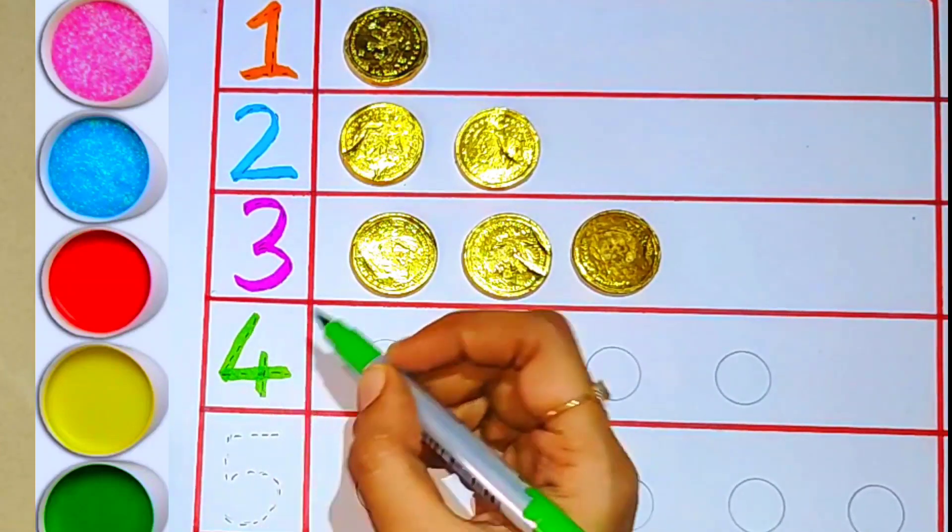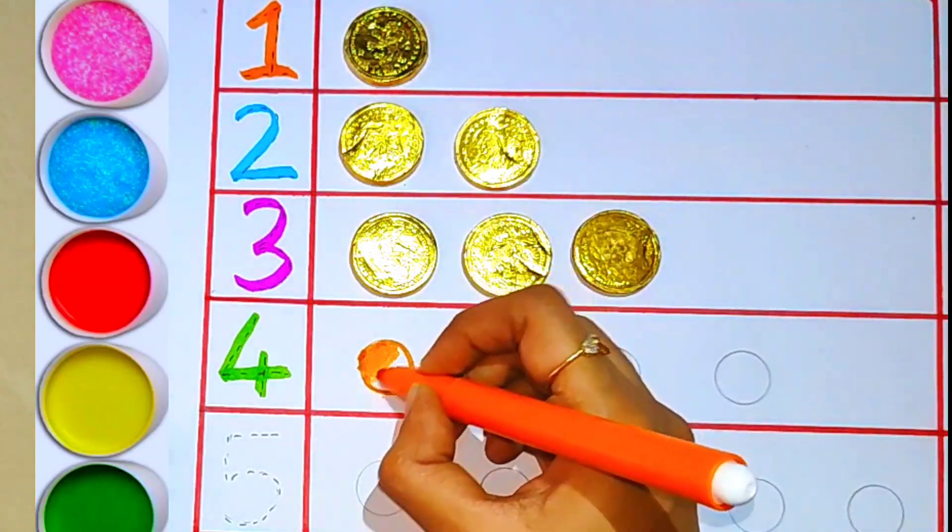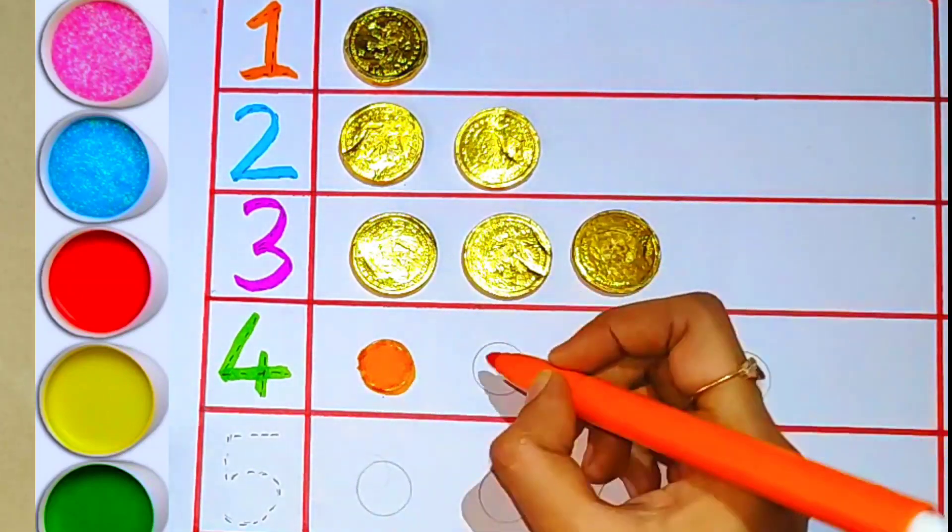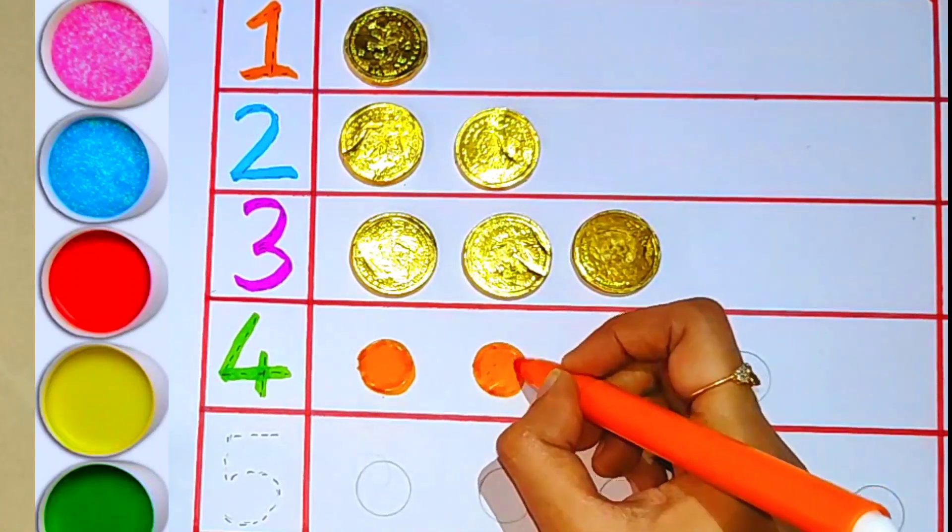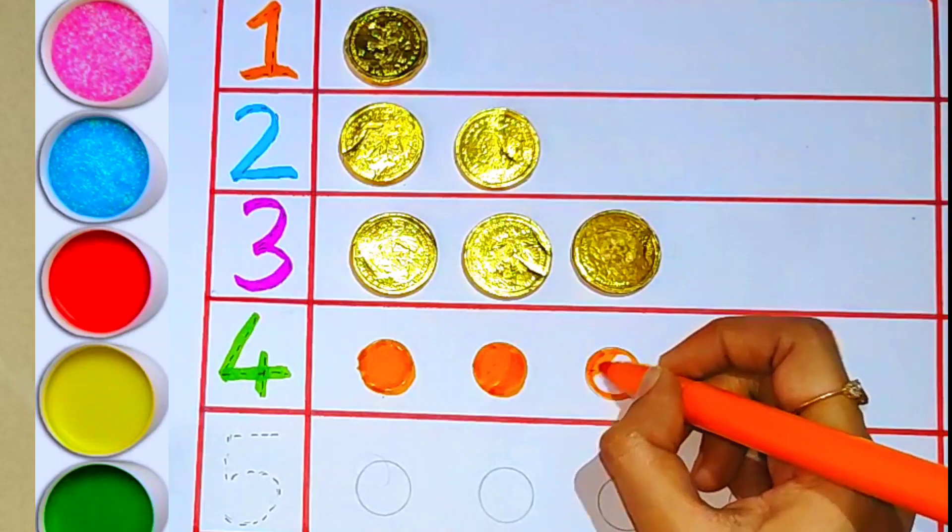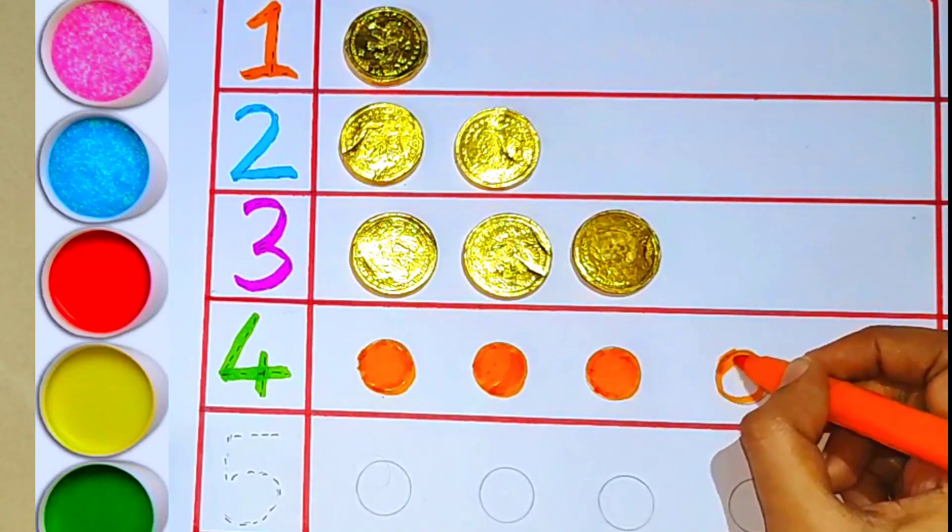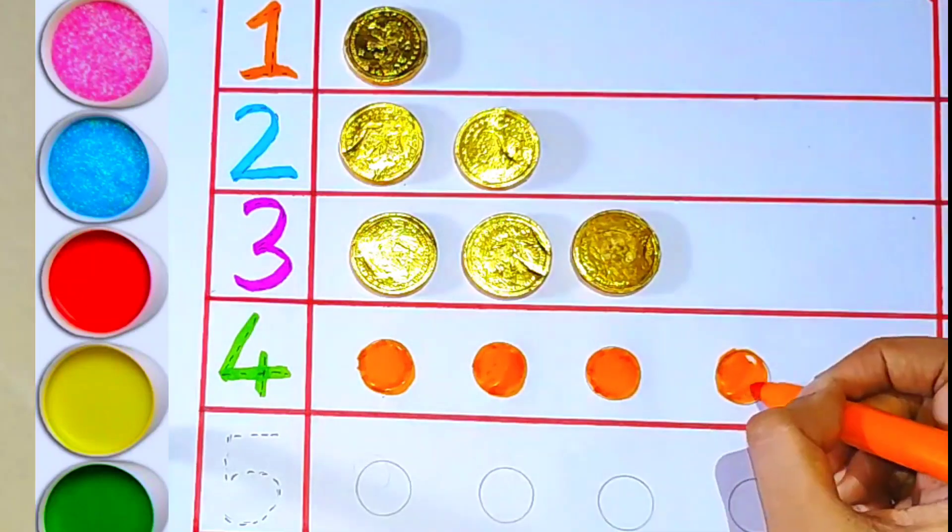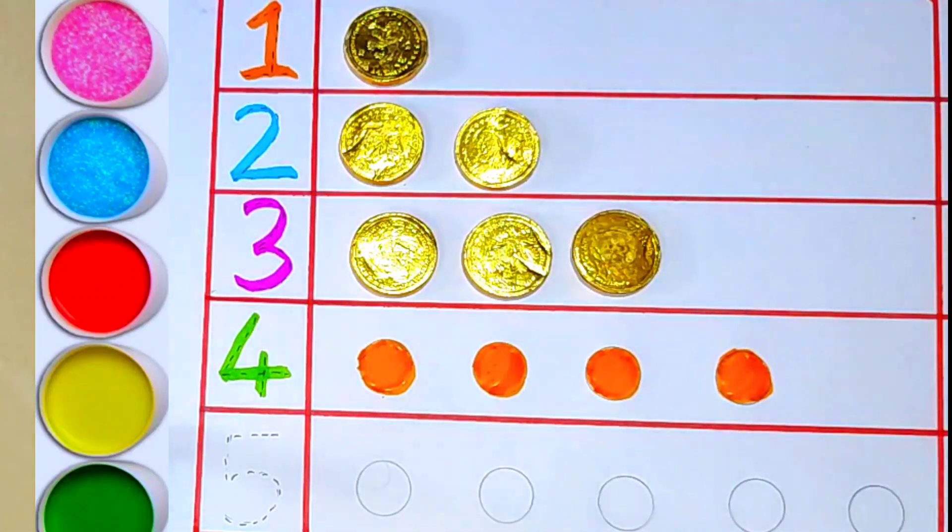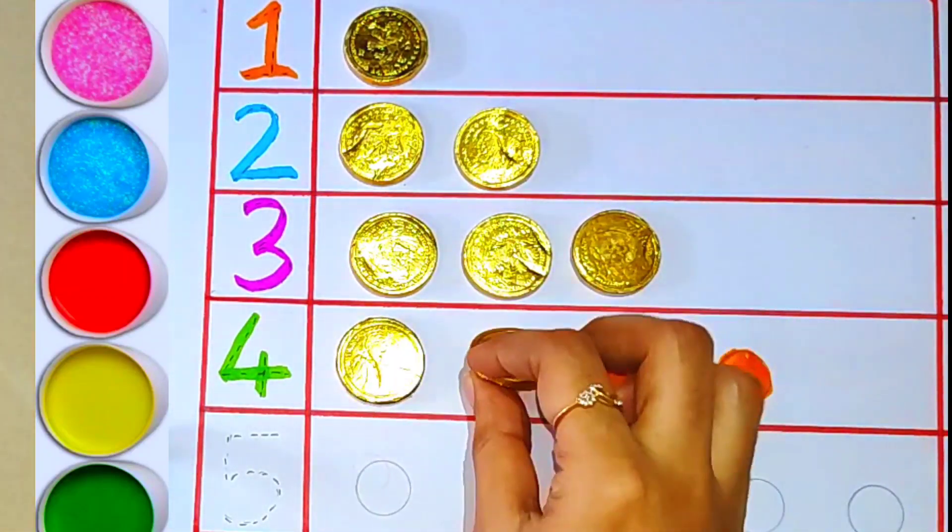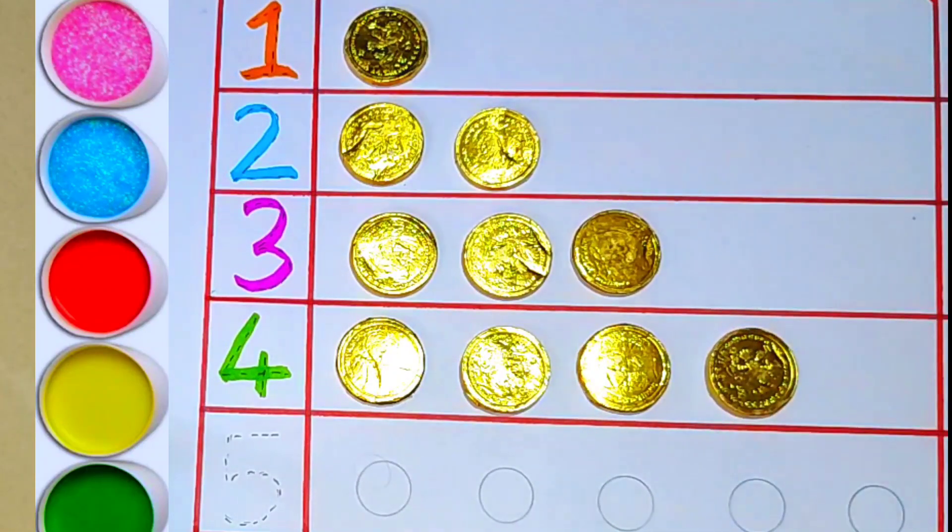Number four, orange color. One, two, three, four - four points. One, two, three, four - four coins.